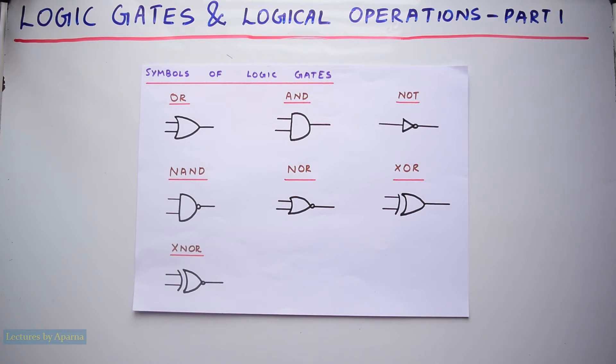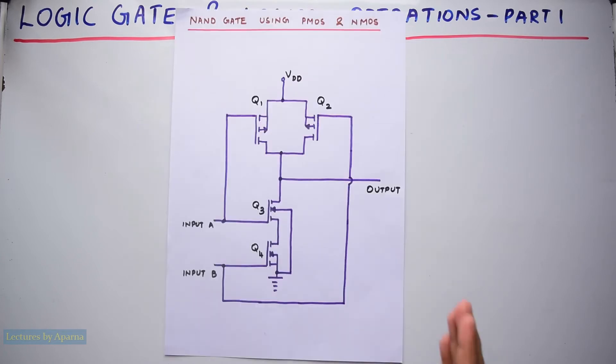Each logic gate will be having an electronic circuit that is designed using transistors. For example, this is a NAND gate that is realized using PMOS and NMOS transistors. But we use logic gate symbols for making the study easier.